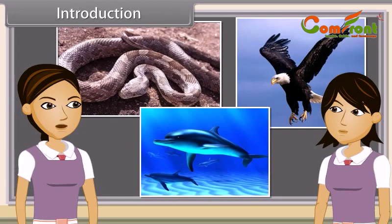Do you know how life on earth was million and million years ago? And how did such a large variety of organisms emerge from the primitive earth? Let me explain to you what happened on earth million years ago and how all the organisms — dinosaur, amoeba, plants and other animals evolved.